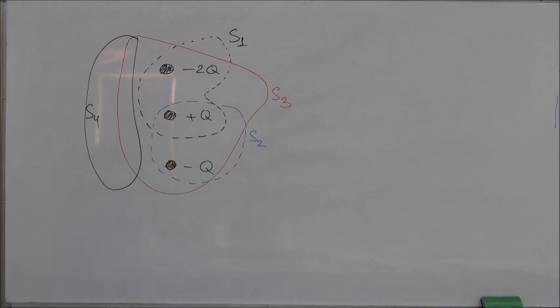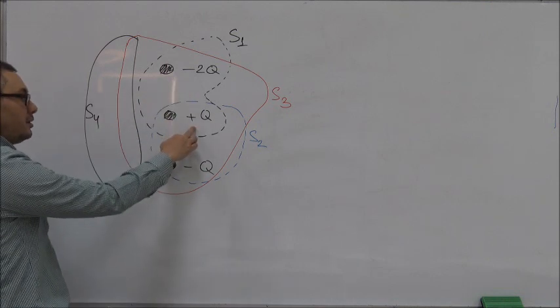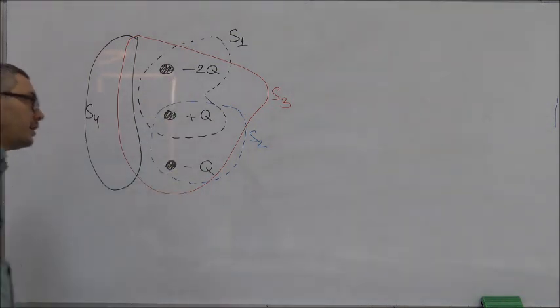In this problem, we have three point charges: -2q, +q, and -q. The picture is meant to be three-dimensional. Here we have four different surfaces: S1, S2, S3, and S4. What you see on the picture are the intersections of these surfaces with the plane of the board. The question is: what is the net electric flux through each of these surfaces?